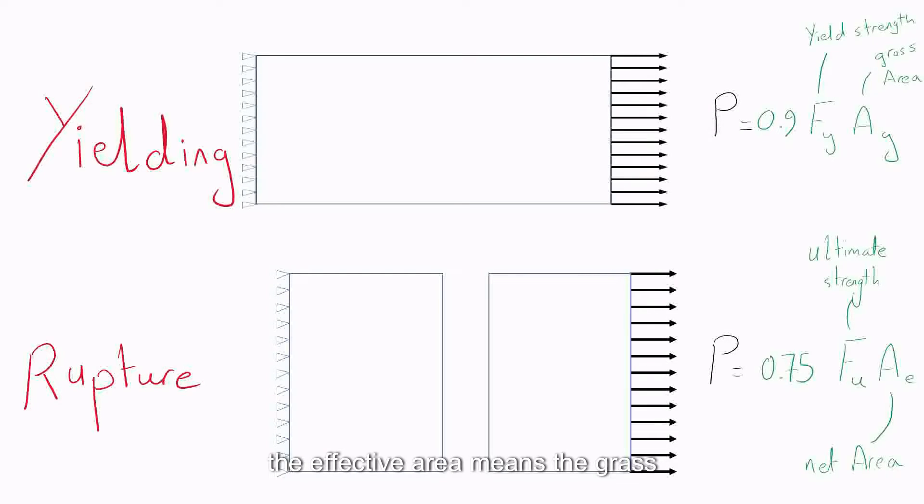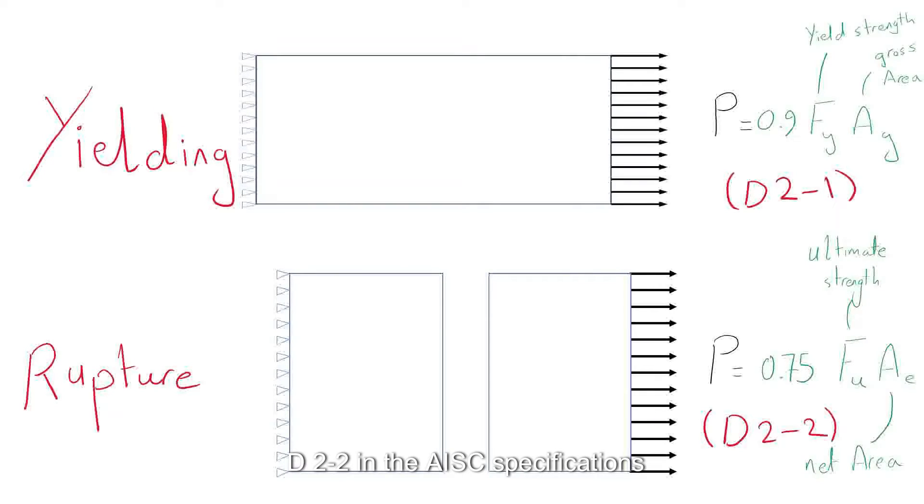The effective area means the gross area minus the holes multiplied by a factor u, which we will discuss in the next part. Notice that both values are multiplied by strength reduction factors: 0.9 for yielding and 0.75 for rupture. These are equations d2-1 and d2-2 in the AISC specifications.